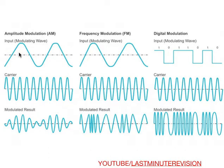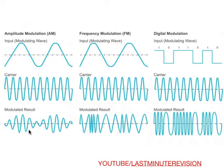This is the input signal and this is the carrier. When we combine both, we get this modulated result. As the name suggests, in amplitude modulation there is a variation in the amplitude.